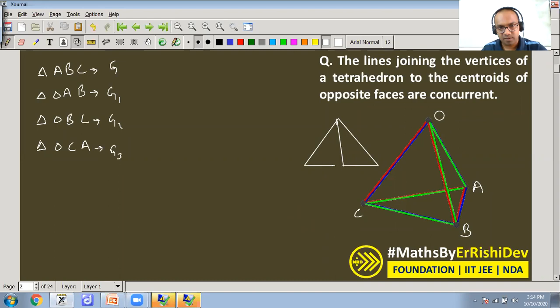Let's say the medians - the point of intersection that happens in a triangle. G1, G2, G3, G - centroid of respective triangles.